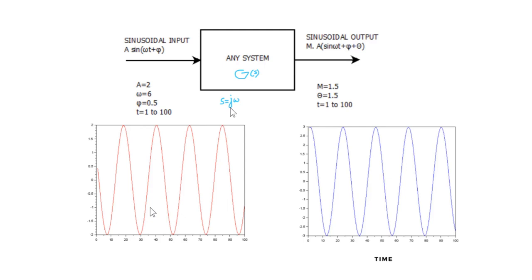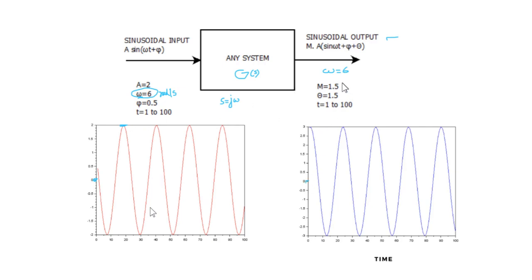First, I want you to understand that whenever we apply a sine wave or sinusoidal input to a system, the output is also sinusoidal. The frequency at the output stays the same — for example, if the input frequency was six radians per second, the output will have the same frequency. However, the amplitude and phase will change. Amplitude is the distance of the peak from the origin; in this example, the input amplitude is two and the output is three, so the amplitude is multiplied by a factor of 1.5.